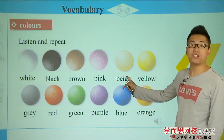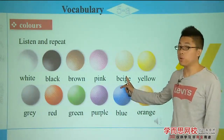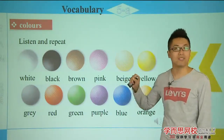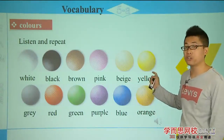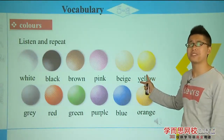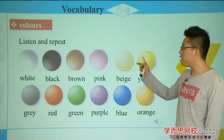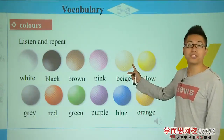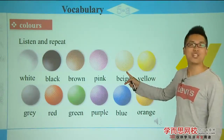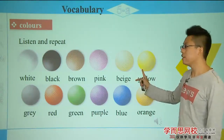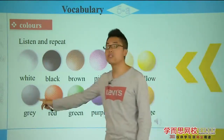We call beige '淡黄色' or '米黄色' in Chinese, while yellow means '生黄色' or simply yellow. They often appear together — beige and yellow.